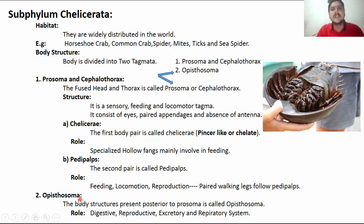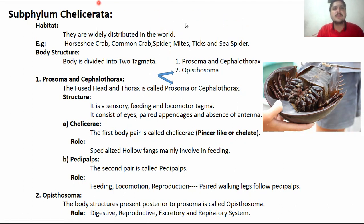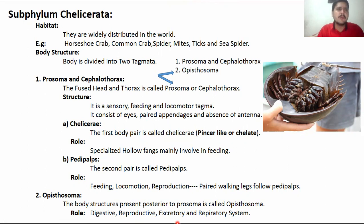The opistosoma is the body structure posterior to the prosoma. Because this is the abdominal region, different body parts are present here. The digestive system, reproductive system, excretory system, and respiratory system are all present in the opistosoma region. Book lungs are also present in this region.